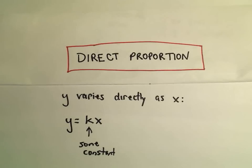Alright, in this video I'm going to do another example involving direct proportion. So again, if we say Y varies directly as X, we can write that as Y equals KX.